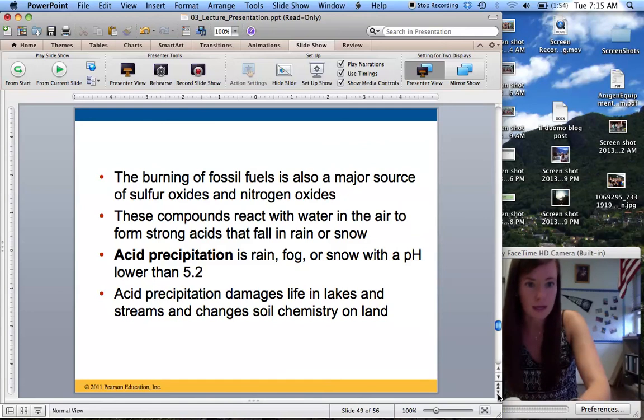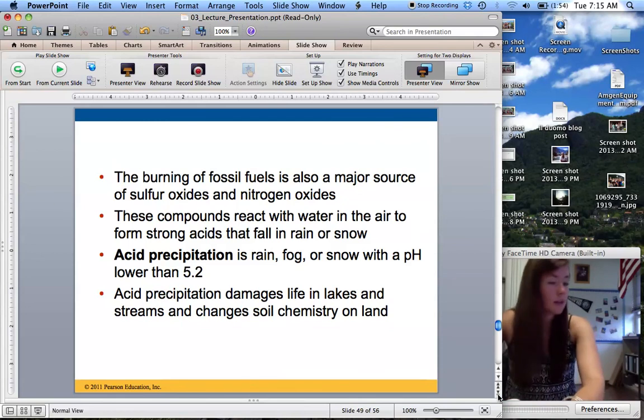And then it leads to acid rain, which is rain, fog, or snow with a pH of lower than 5.2, which messes up the chemistry of everything that the rain falls on. Think about it, if we're used to rain at around pure water, which would be 7, and now we're at 5.2,